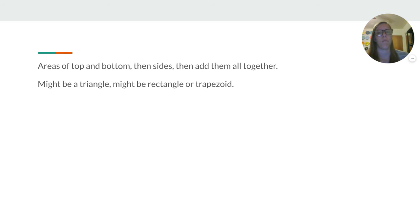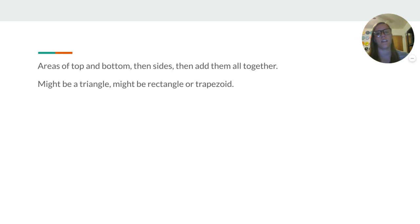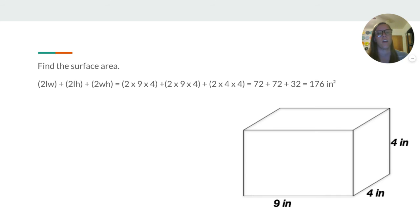So, areas of top and bottom, top and bottom, then the sides, then add them all together. It might be a triangle, might be a rectangle, or a trapezoid. So, remember the formulas might be slightly different then.